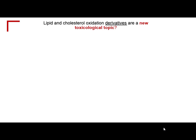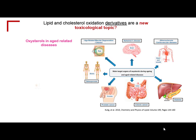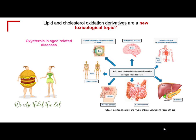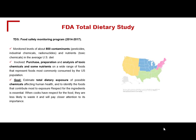Cholesterol has been studied for more than 80 years — maybe their oxidation derivatives could be a new toxicological topic. Oxysterols or COPs have also been related with the deposition of different tissues and with other chronic diseases that, at the beginning, I thought maybe were not related with the diet, but some relationship has been shown. And again, we are what we eat. The FDA Total Dietary Study, starting in 2014 and closing in 2017, is an FDA study monitoring more than 800 contaminants — mostly pesticides and industrial chemicals — in the average US diet.